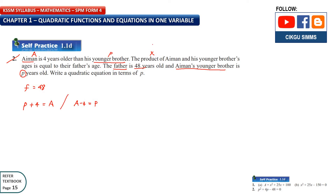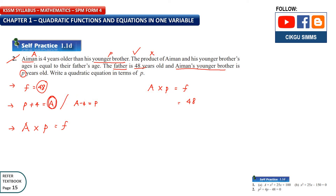The second piece of information: the product of Ayman and his brother's ages equals their father's age. So Ayman times brother equals father's age. Father's age is 48, so we substitute 48. Ayman's age is P plus 4, so: (P + 4) times P equals 48.